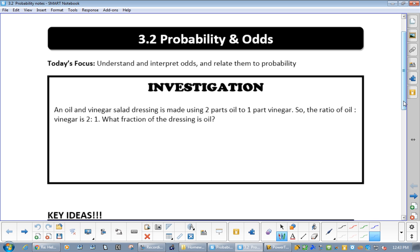Now, an oil and vinegar salad dressing is made of two parts oil to one part vinegar. So the ratio of oil to vinegar is two to one. So what fraction of the dressing is oil? Two over one? Two over three. Okay? What's the formula for it, then?